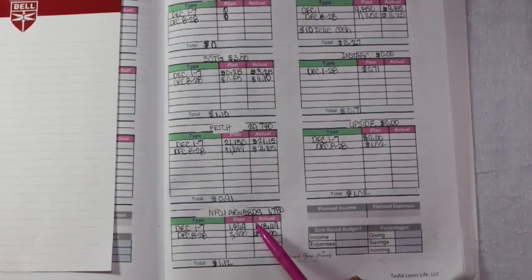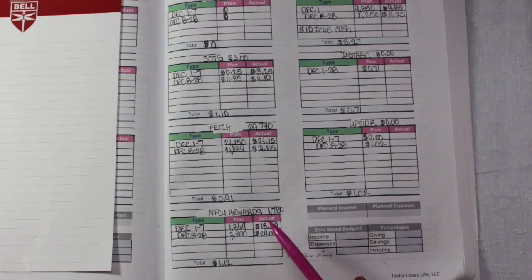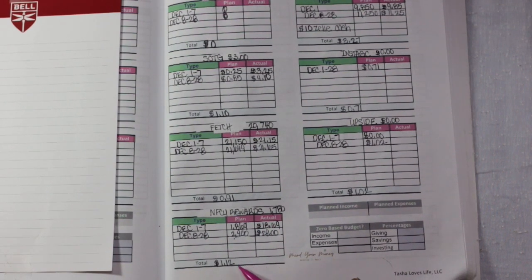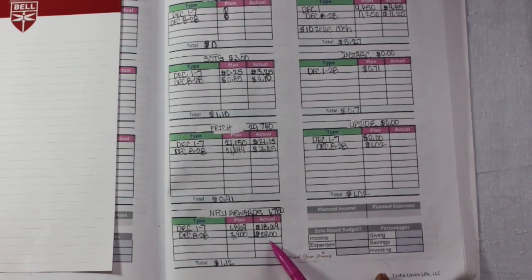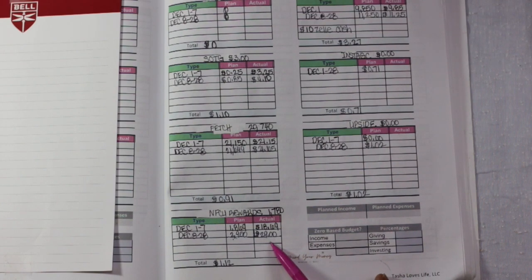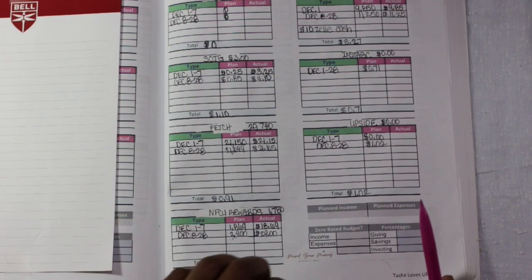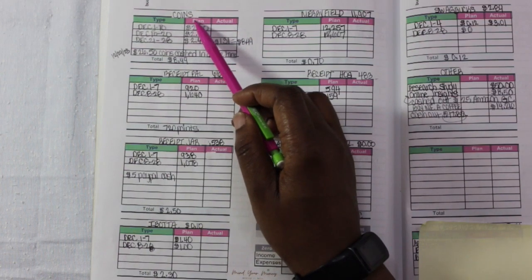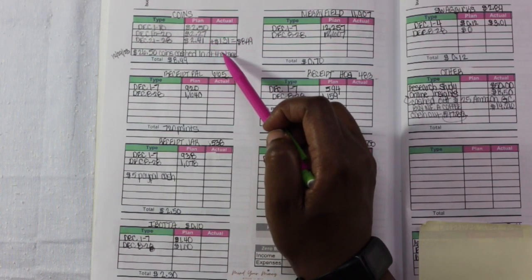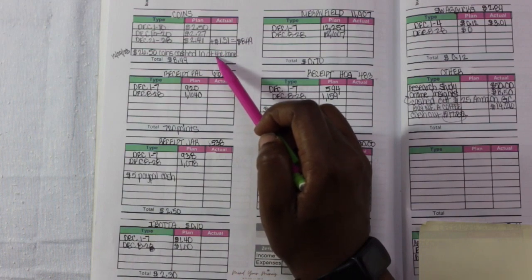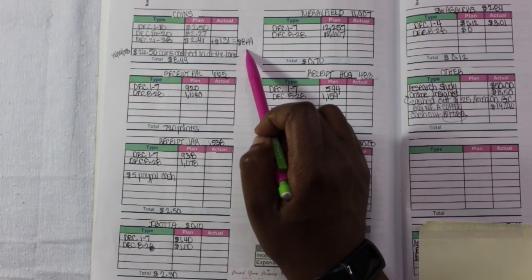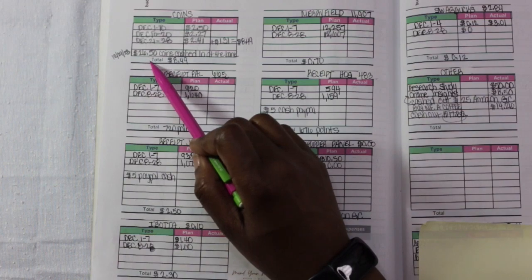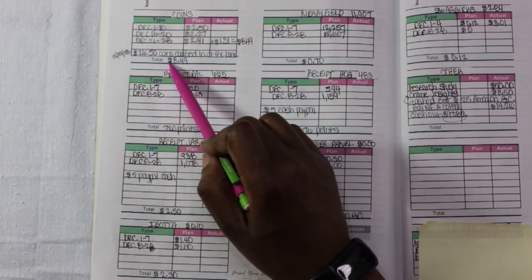Next we have the Credit Card Rewards. And I did earn $1.12. As of December, I had $29 waiting to save up in order to cash out for this one. Next we have Coins that I accumulated, whether they were from found money that I found on the ground or if they were just change from cash back. It was $8.49 total. I went ahead and cashed out $26.50. Took that to the bank.